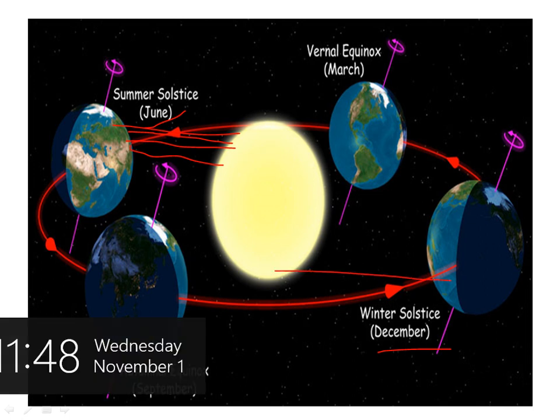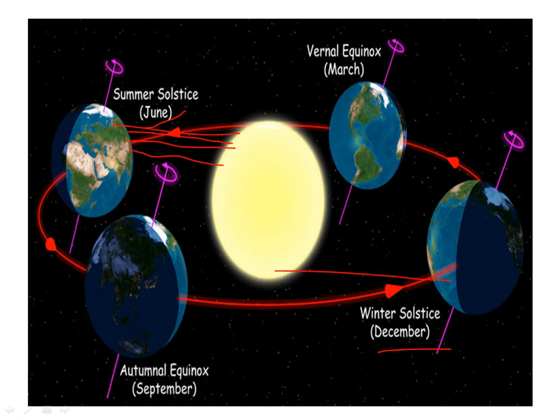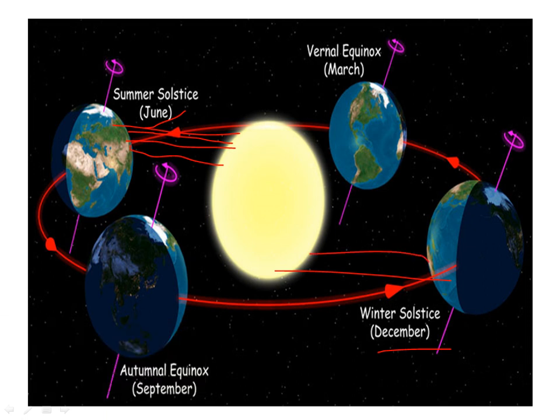This is the Tropic of Capricorn. Our days are big and nights are small — this is the Southern Hemisphere. In the Northern Hemisphere, our nights are big and days are small. This applies to places like Australia, which is in the Southern Hemisphere.